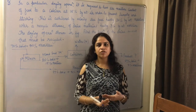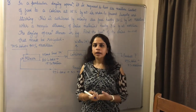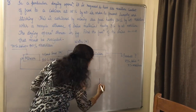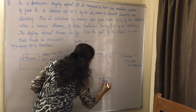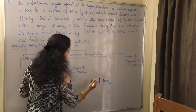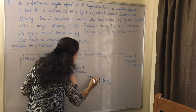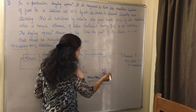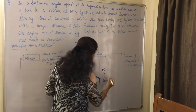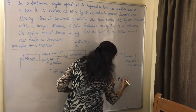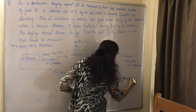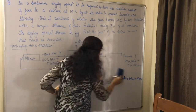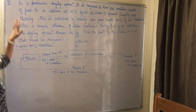Hello students, today we will discuss drying problems from process calculation. In the basic drying operation, we have a dryer and the feed enters the dryer which contains solid plus moisture. Drying takes place, moisture is removed from the feed, and you get the product which contains dry solid plus some remaining moisture.